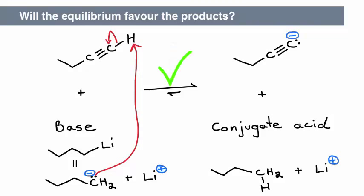The equilibrium lies to the product side. The base is an sp3 hybridized carbanion, while the conjugate base is an sp hybridized carbanion. The conjugate base is more stable than the base, meaning the equilibrium lies to the product side.